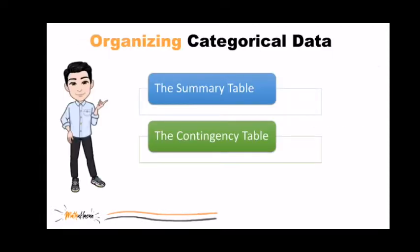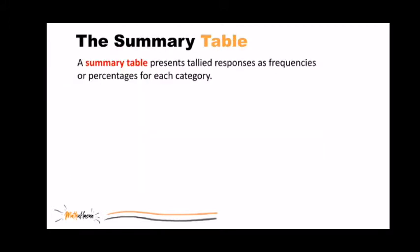For organizing categorical data, we can use either the summary table or the contingency table. A summary table presents tallied responses as frequencies or percentages for each category.